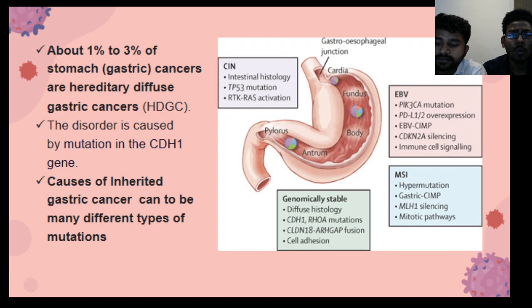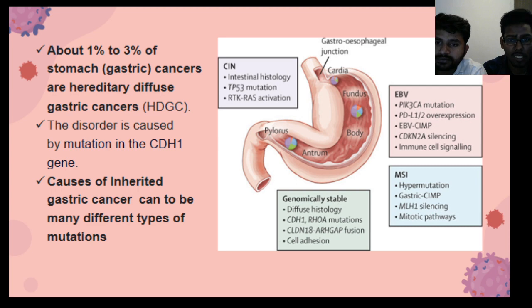About 1–3% of gastric cancers are hereditary diffuse gastric cancers. The causes of inherited gastric cancer can be many different types of mutations.